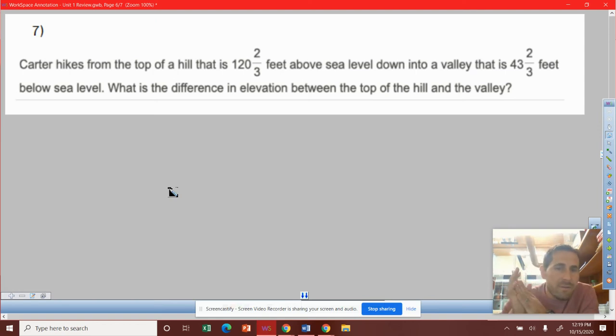Carter hikes from the top of a hill that is 120 and two-thirds feet above sea level down to a valley that is 43 and two-thirds feet below sea level. What is the distance in elevation between the top of the hill and the valley?